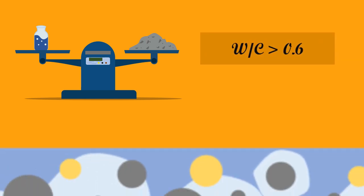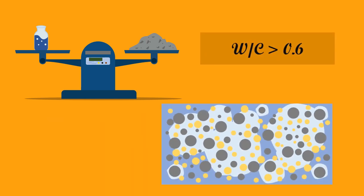If the water cement ratio is more than 0.6, the hydrated products may not have much space to fill as the water is already filled with it.